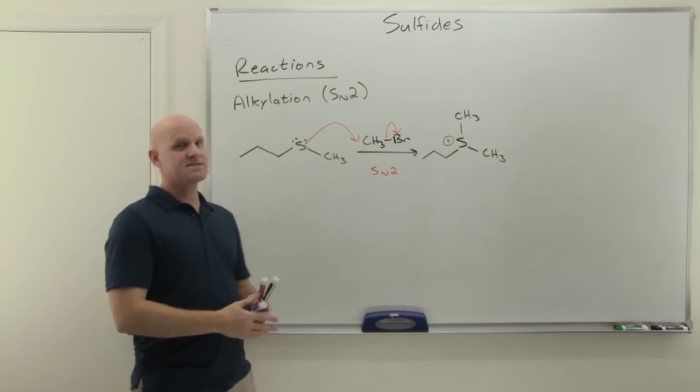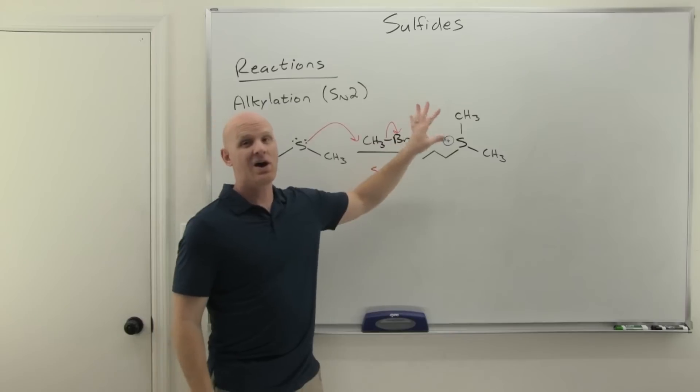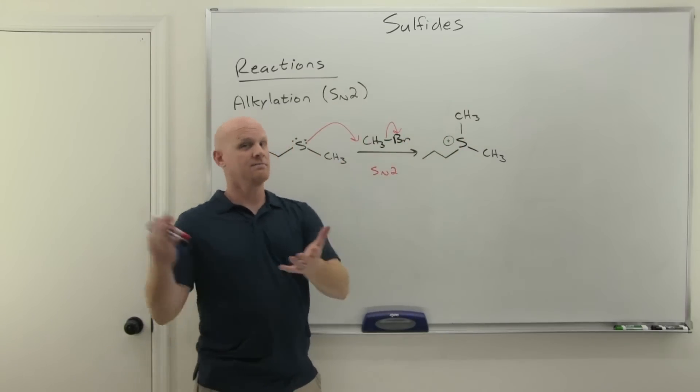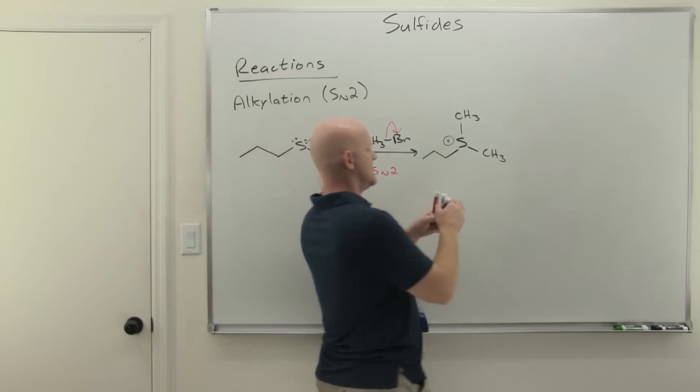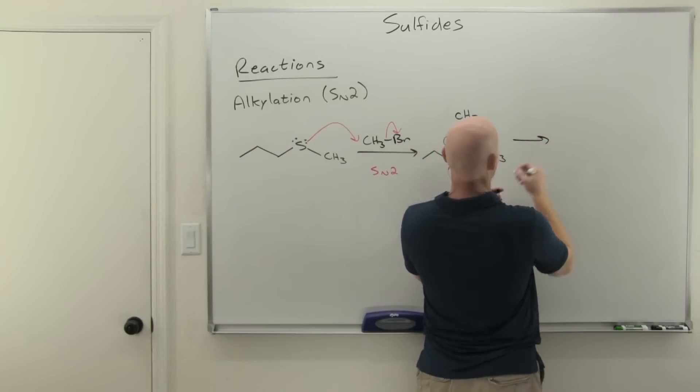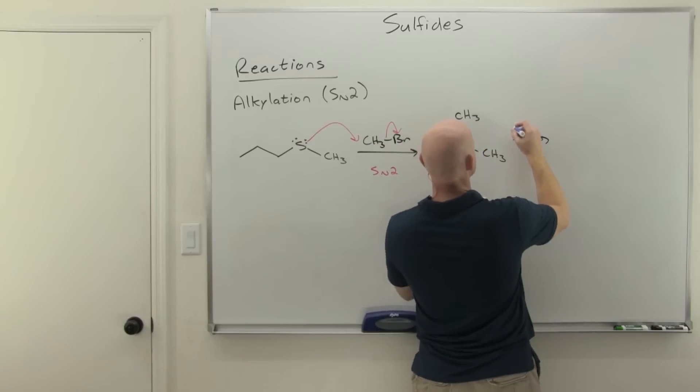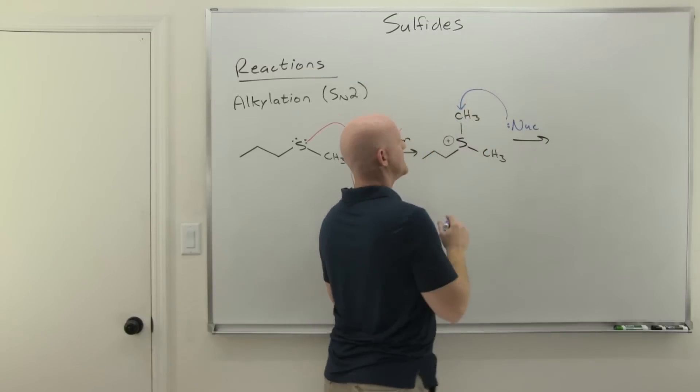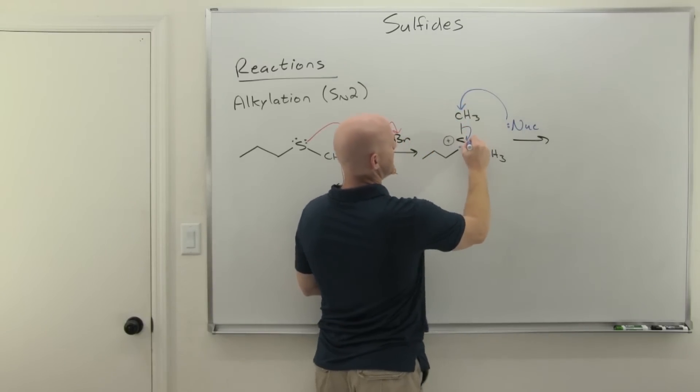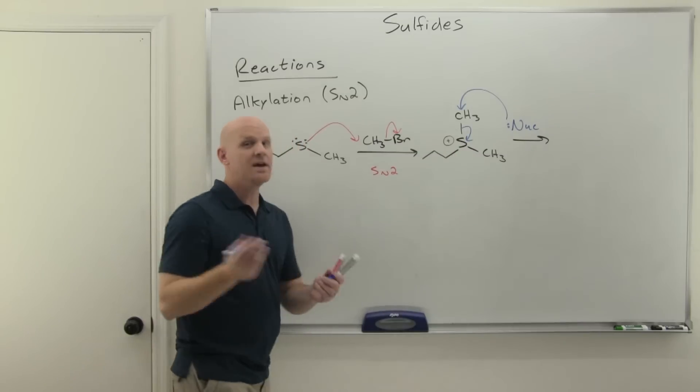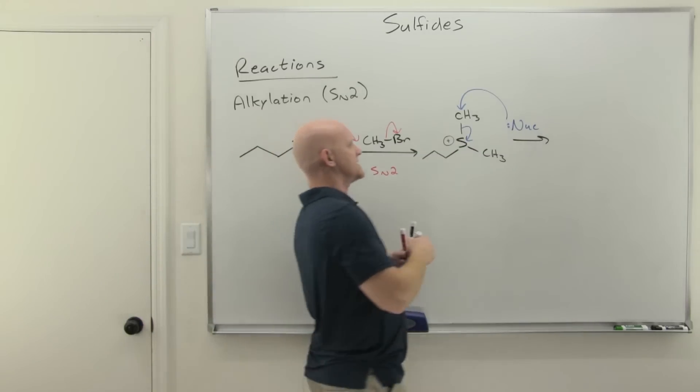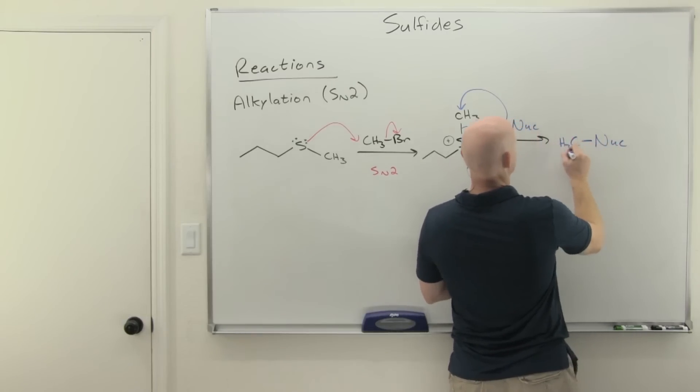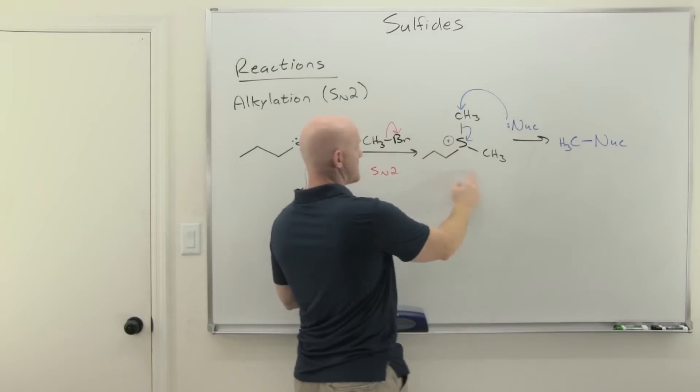And what's nice about this is that this actually now can act as an alkylating agent for something else. So we added the methyl group to it. Well, you can actually go and add the methyl group to something else as well. So if we were to now add some other nucleophilic species to this, we could go attack that and it would kick off our original reactant now as the leaving group in another SN2 reaction. And we'd now have some nucleophile attached to our methyl group. And then again, we'd have our original reactant back.